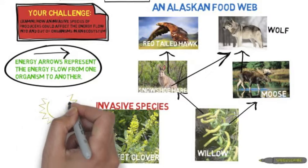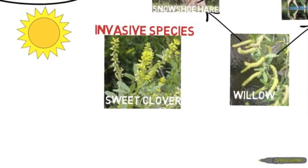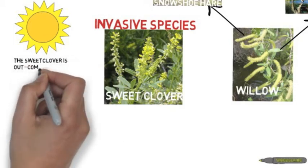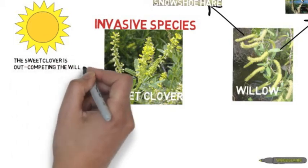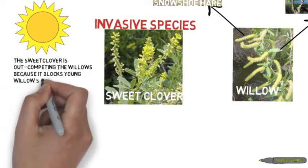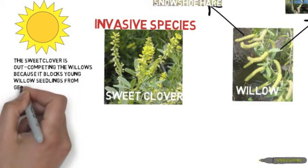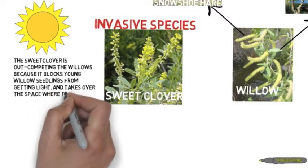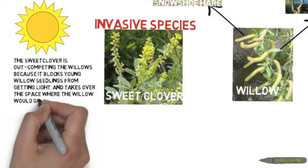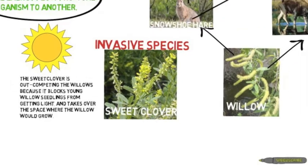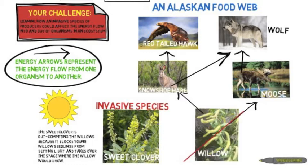Both the sweet clover and the willow need the sun because they need to photosynthesize. The sweet clover is out-competing the willow seedlings because it blocks young willow seedlings from getting light and takes over the space where the willow grows. Hence the willow cannot photosynthesize and get energy from the sun, so its population decreases.